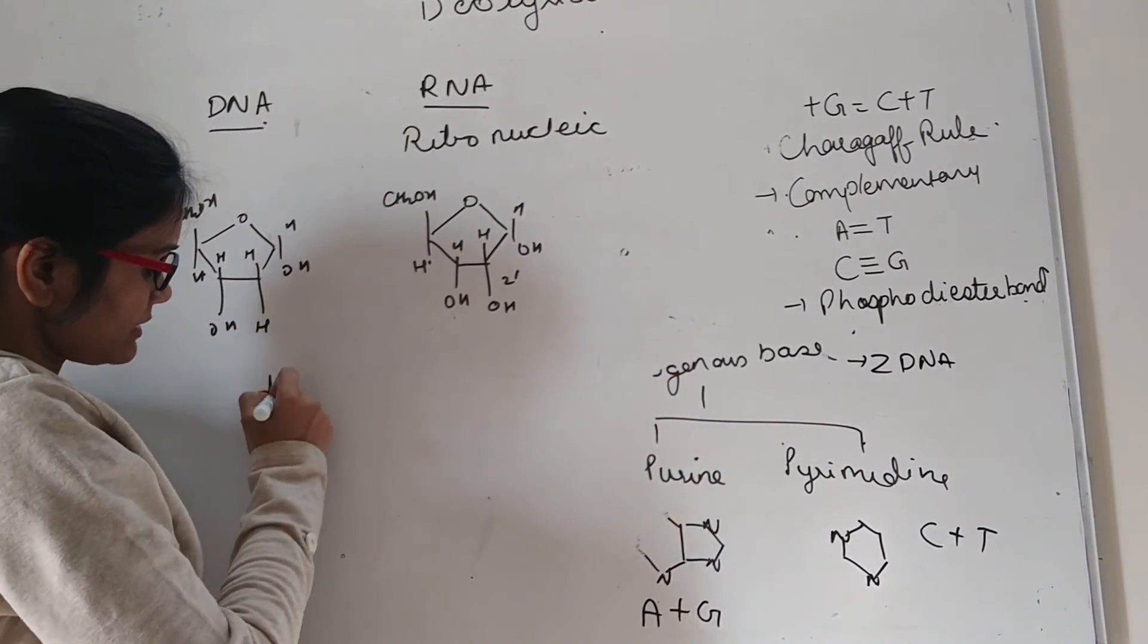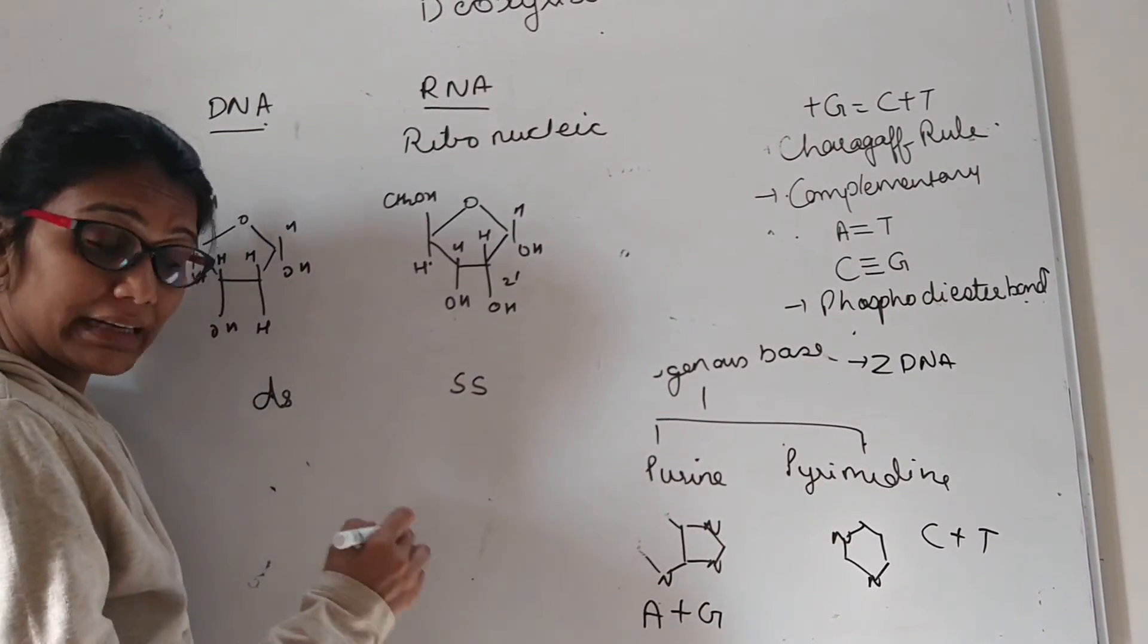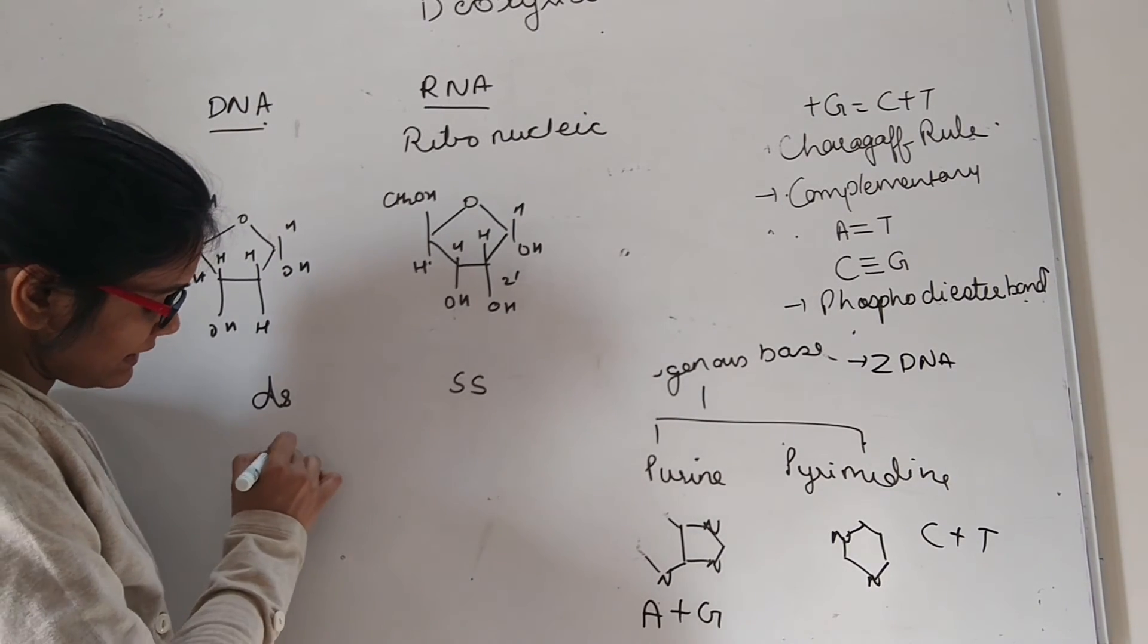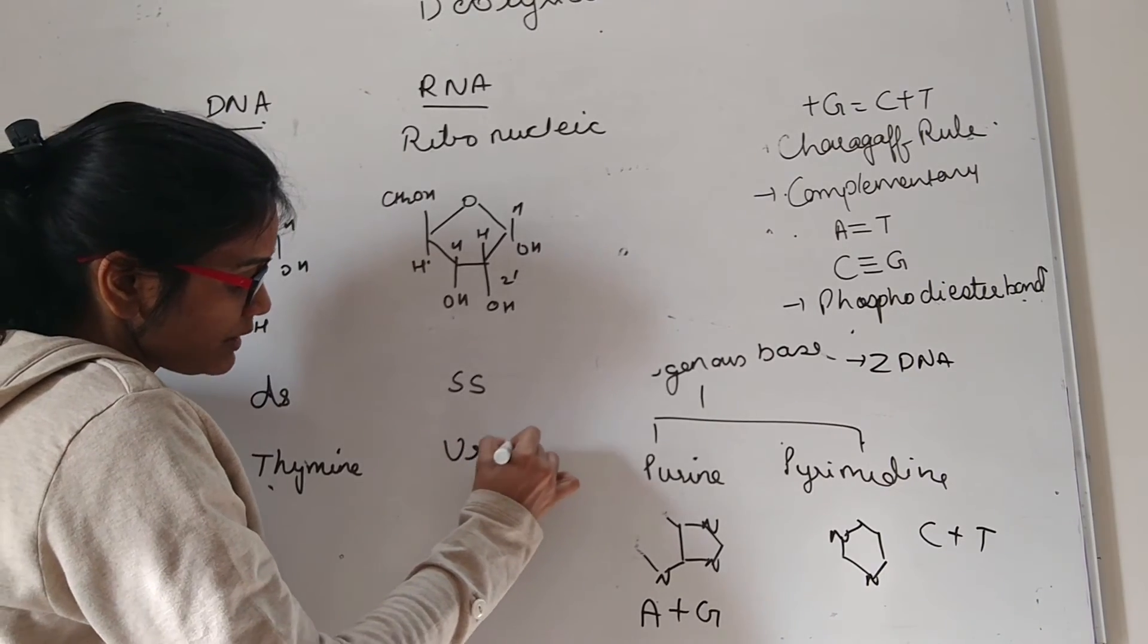The DNA is double helical structure, while RNA is single-stranded. And the nitrogenous base pyrimidine in DNA is thymine, while in RNA it is uracil.